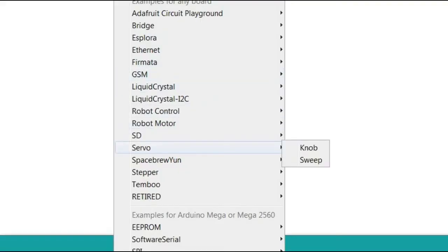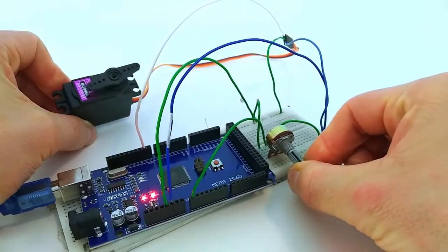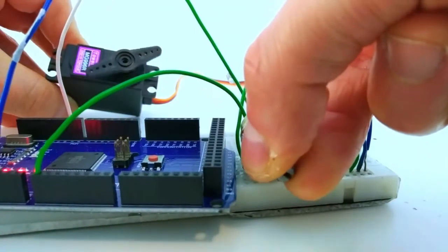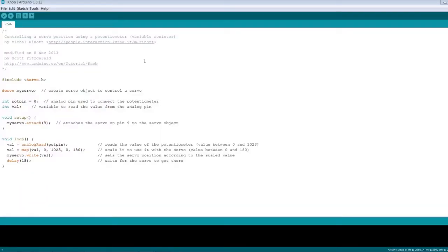One of it is a simple code that allows you to control a servo with an analog input from a potentiometer. As we can see, in Arduino, it is super simple to drive servos.